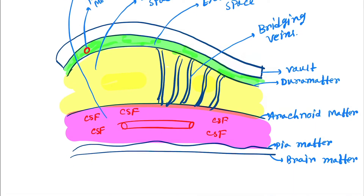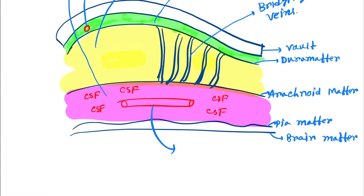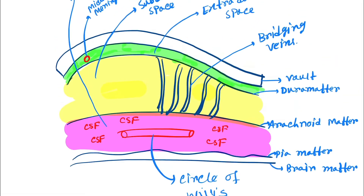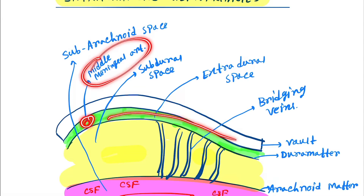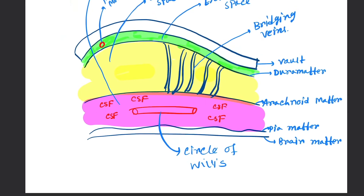The subarachnoid space contains CSF plus the Circle of Willis. The extradural space contains the middle meningeal artery.